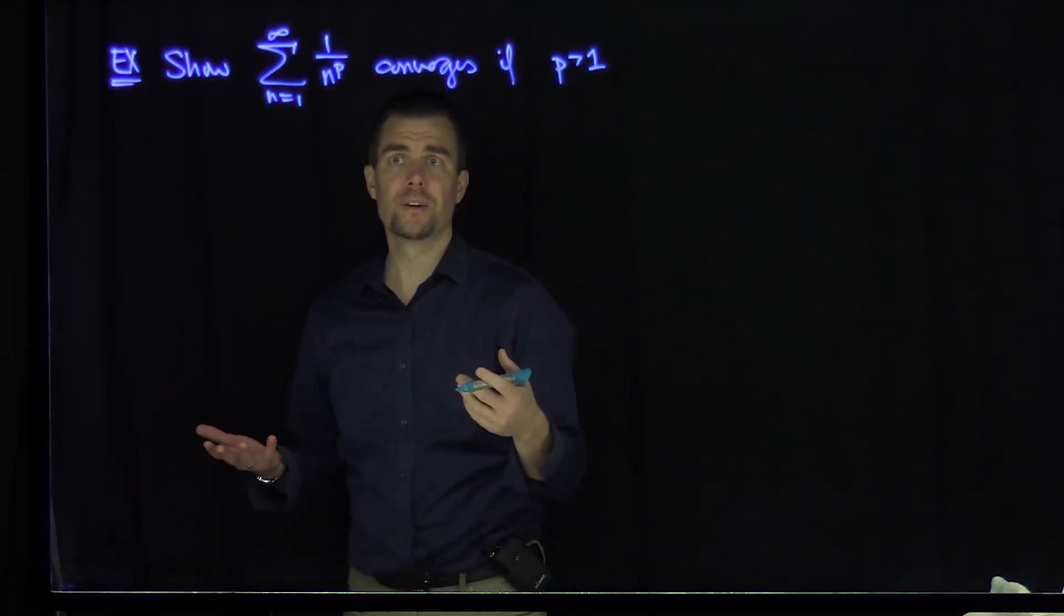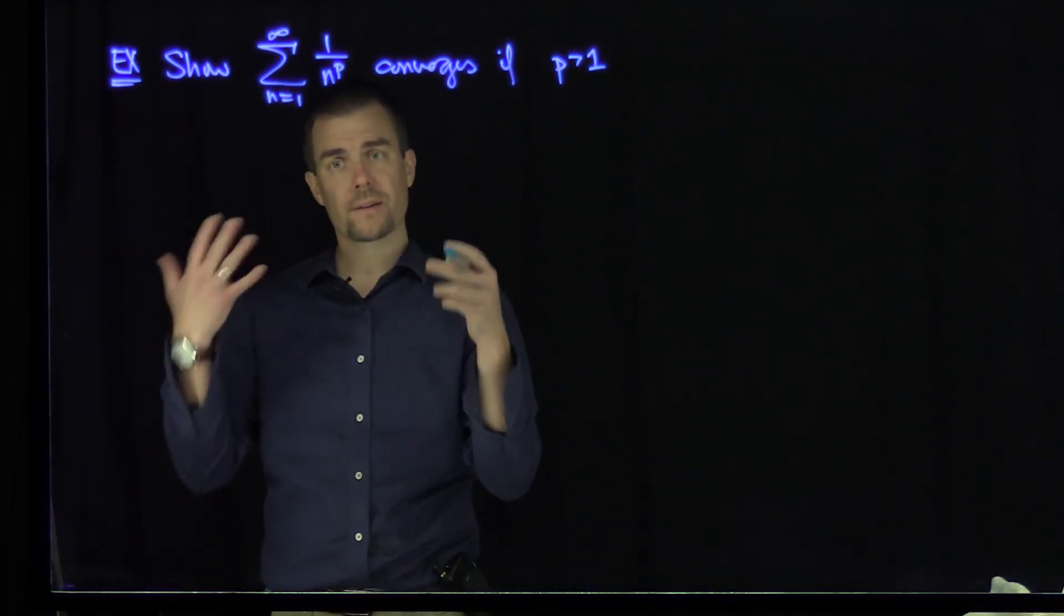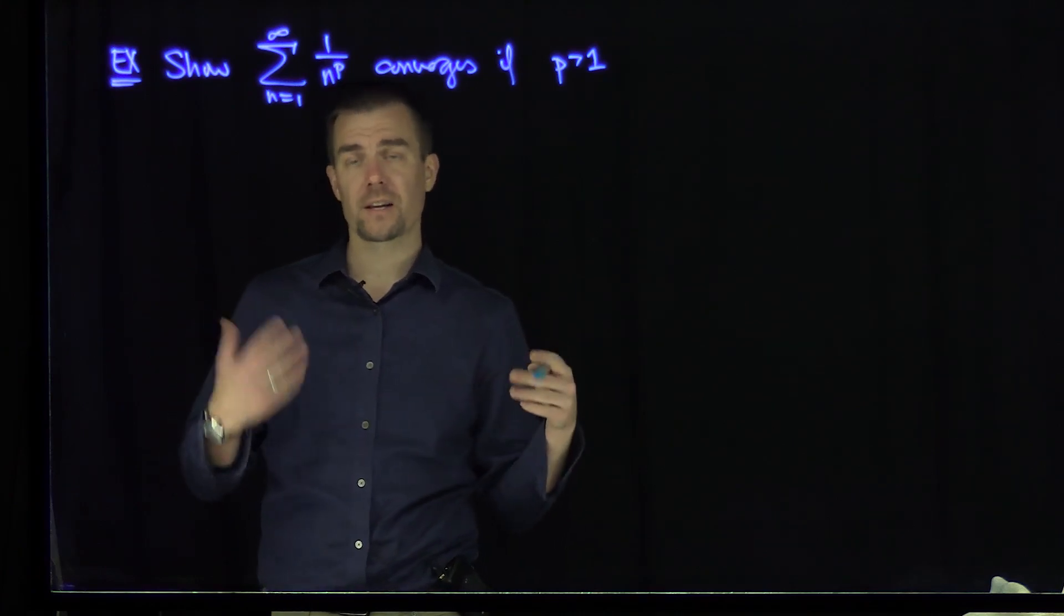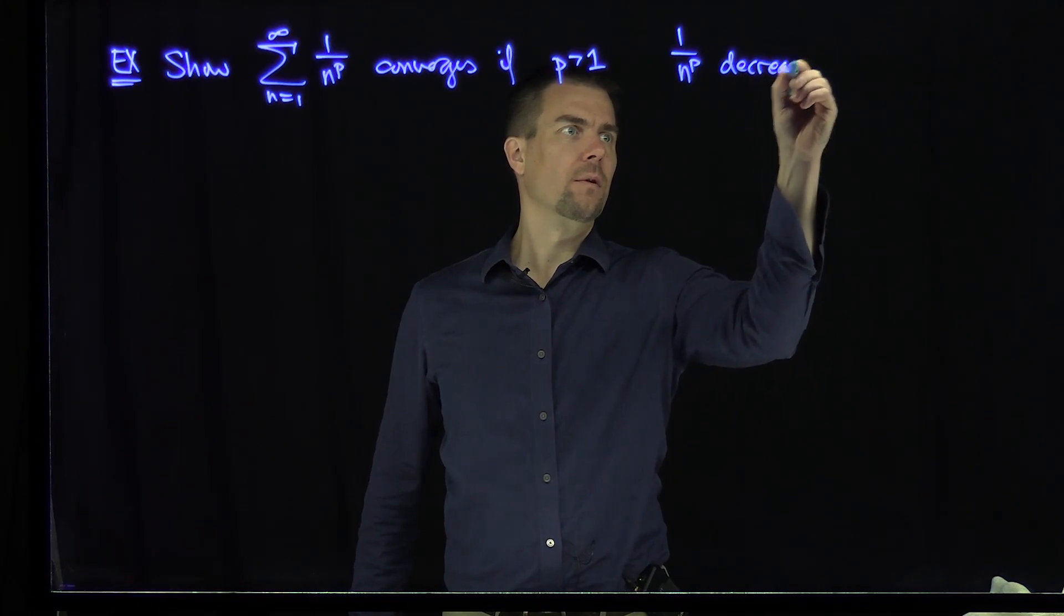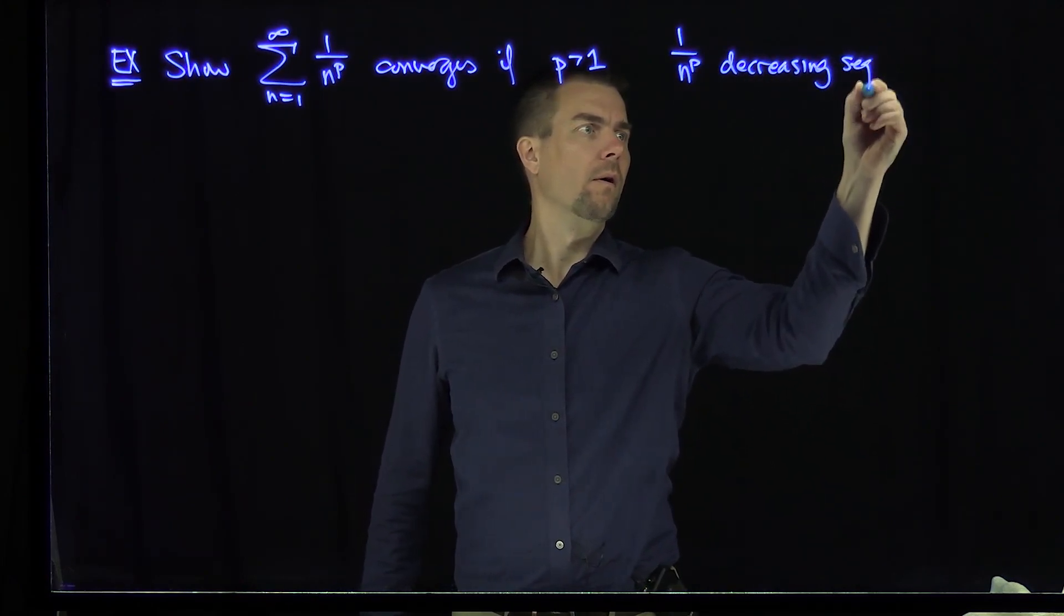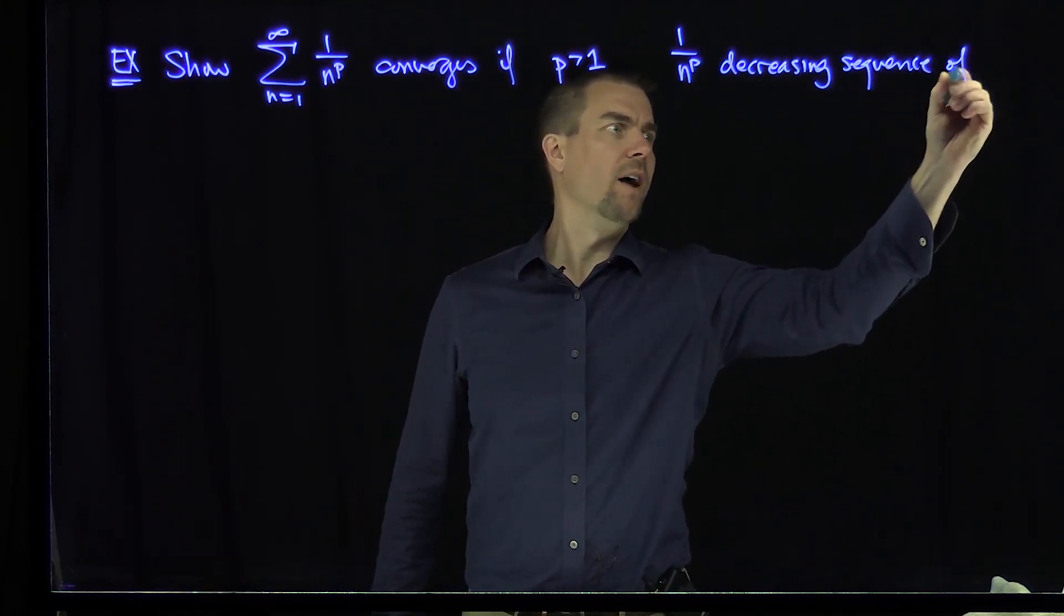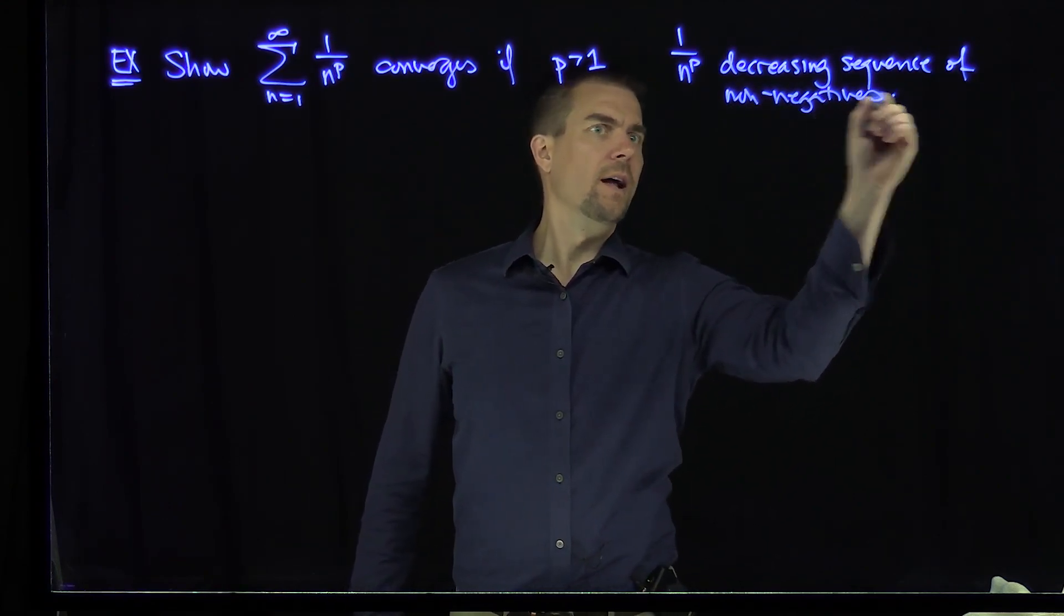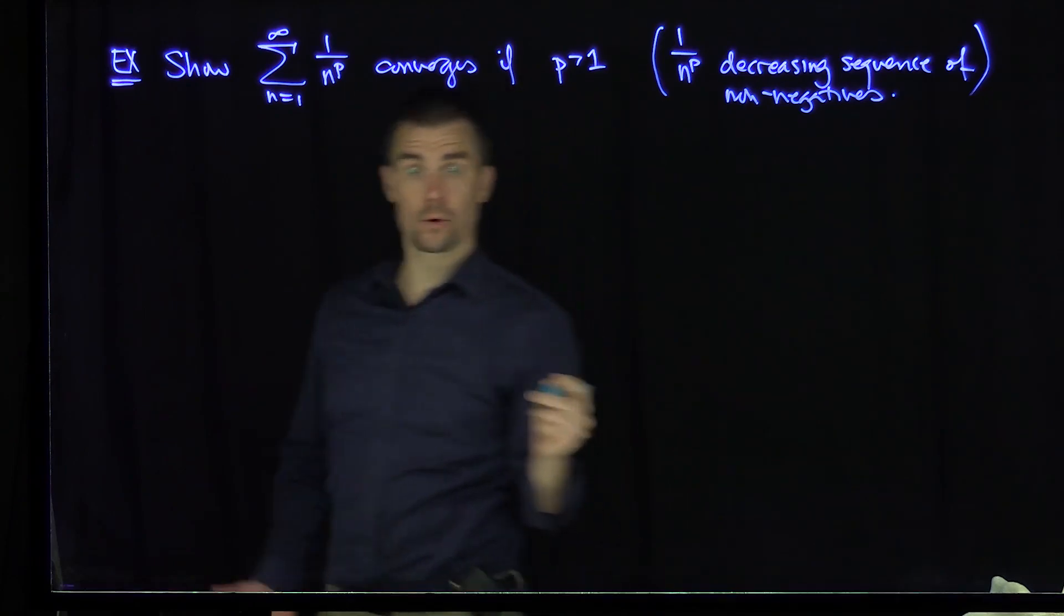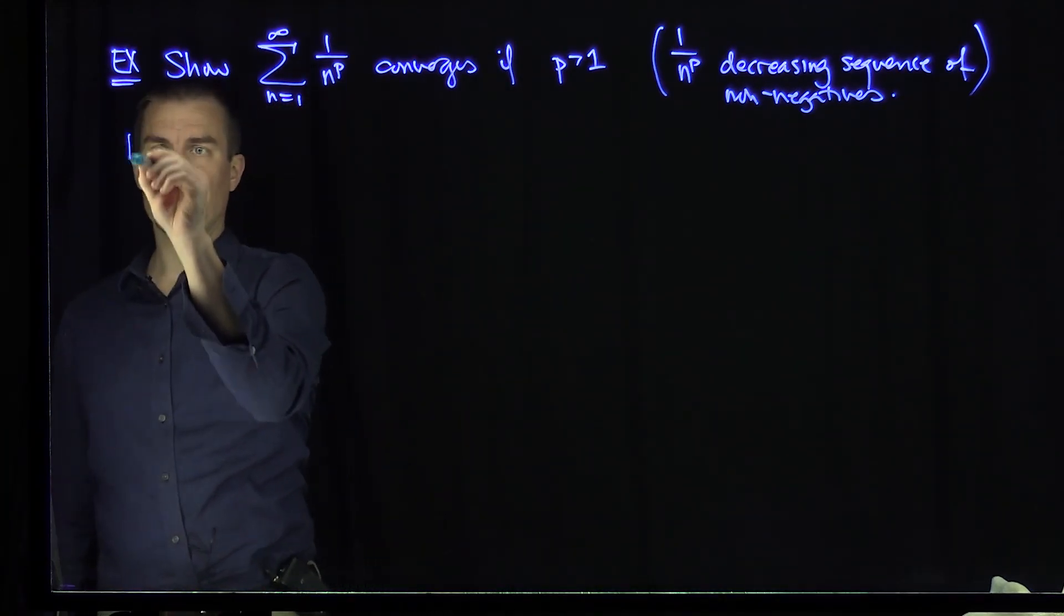And so what we'll do is use Cauchy Condensation. Of course, 1 over n to the p is a decreasing sequence of non-negatives. And so this condition allows us to use Cauchy Condensation.